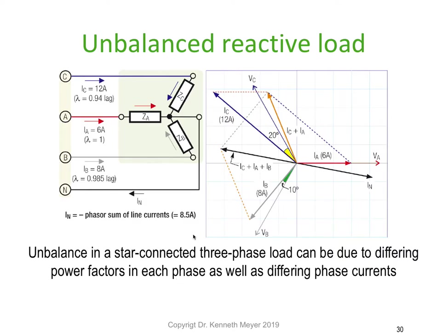Now let's increase the complexity. We're going to find the neutral current in an unbalanced reactive load — in other words, a load where the currents are of different magnitudes and at different angles. I'll work through it slowly, look at the process, and then go through it again.